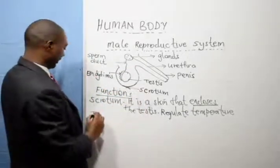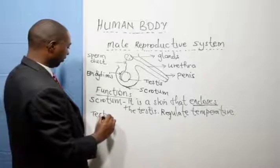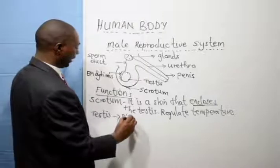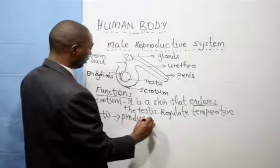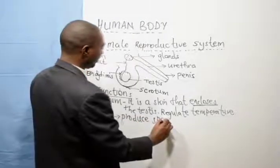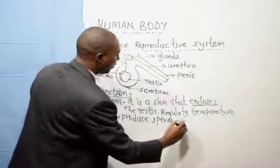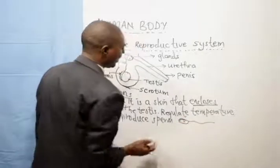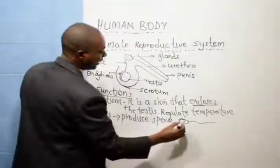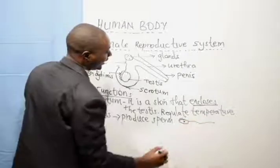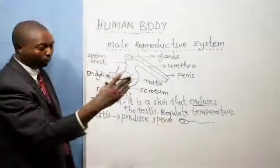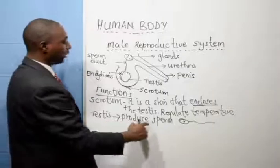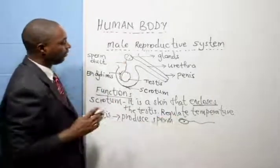Then we go to the testis. The function of the testis — the two of them — is to produce male sex cells known as sperm. The sperm has a head and a nucleus, then it has a tail. This tail helps it to swim in the semen. So the testis produce sperm in large numbers.